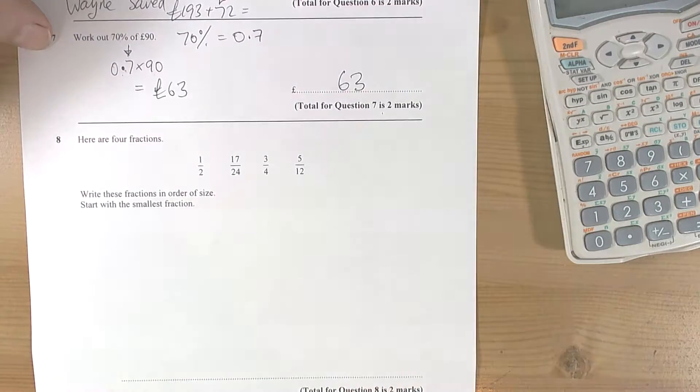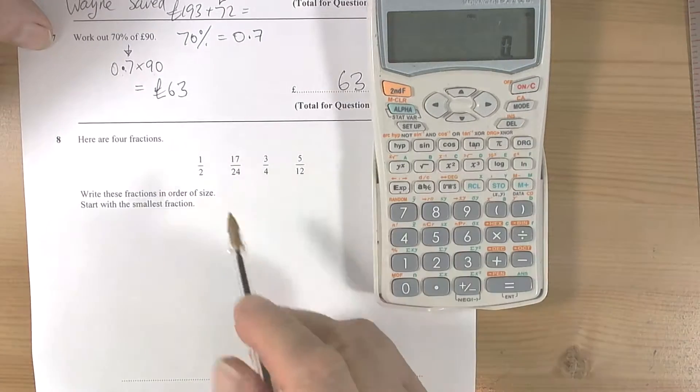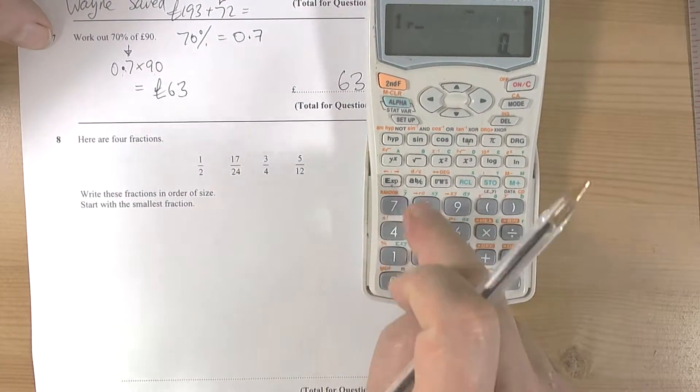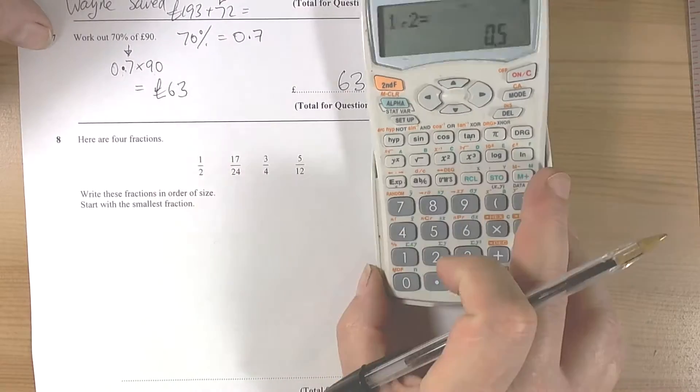The next question says write these fractions in order of size, start with the smallest fraction. Well, we've got lots of ways of doing this. This is a calculator paper, so we could turn every fraction into a decimal because we've got a fraction key. So 1/5 equals, change it, so that's 3.5.